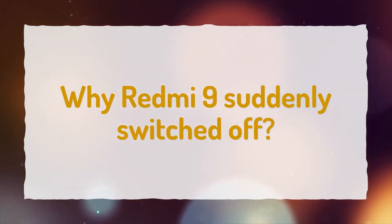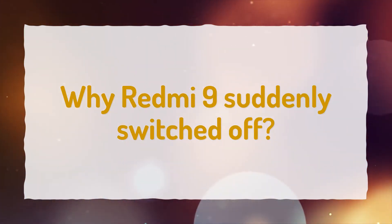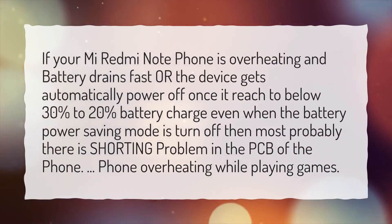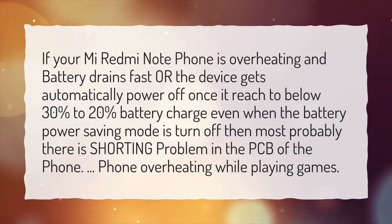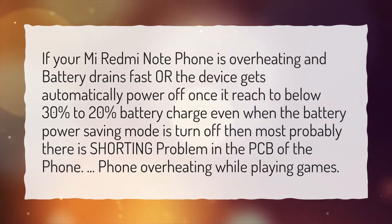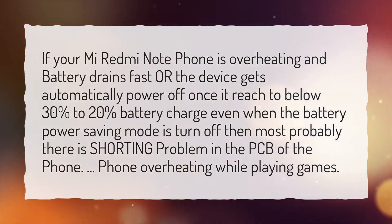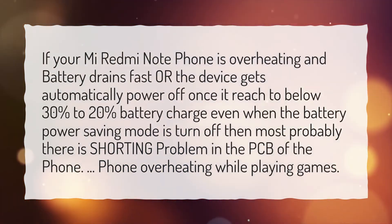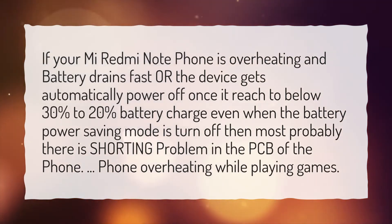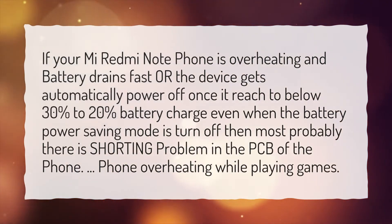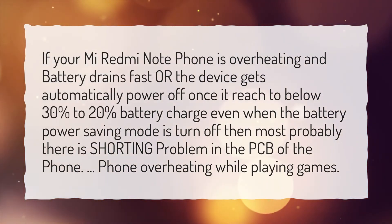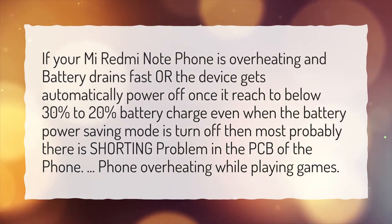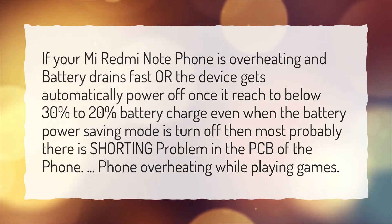Why did Redmi 9 suddenly switch off? If your Mi Redmi Note phone is overheating and battery drains fast, or the device gets automatically powered off once it reaches below 30% to 20% battery charge, even when battery power saving mode is turned off, then most probably there is a shorting problem in the PCB of the phone. Phone overheating while playing games.